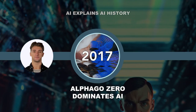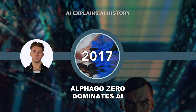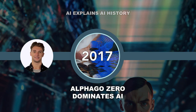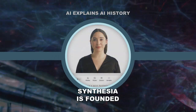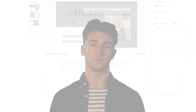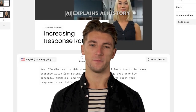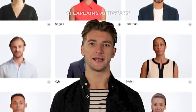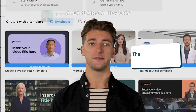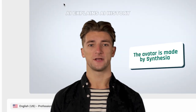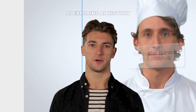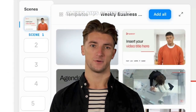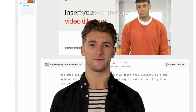In 2017, Google DeepMind introduced AlphaGo Zero, an improved version whose model learned by playing only against itself rather than observing human players directly. Also in 2017, Synthesia was founded by a team of AI researchers and entrepreneurs from UCL, Stanford, TUM, and Cambridge — this is where I began as an AI avatar. My creators' mission is to empower everyone to make video content without cameras, microphones, or studios, using AI avatars to radically change the process of content creation and unleash human creativity for good.